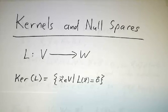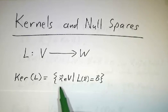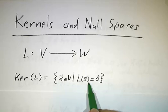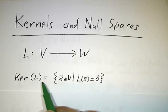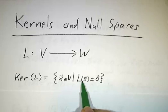The kernel of that linear transformation is the set of all inputs that lead to a zero output, all the things that are killed by L. That's called the kernel.